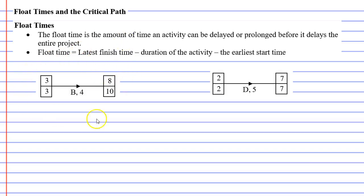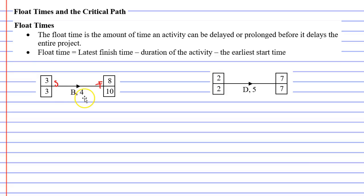To illustrate this we're going to look at activity B below. Activity B has a weight of 4 — let's say that represents 4 hours. Every edge is connected to two vertices, one on the left and one on the right. The vertex on the left represents the start of activity B and the vertex on the right represents the completion of activity B. Let's imagine activity B represents a job a plumber is completing — it's going to take the plumber four hours to lay some pipes.